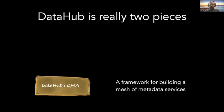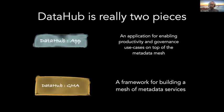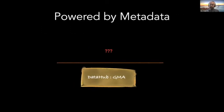DataHub is really two pieces. The first thing is DataHub GMA, which is a framework for building a mesh of metadata services. This is what you use to build a set of metadata services that actually talk to each other and form what I would call a metadata mesh or a metadata fabric. And on top of that is DataHub the app — the application that actually enables productivity and governance use cases on top of this mesh. Today I'll talk about what happens when you have a single powerful metadata mesh powered by DataHub GMA, and what use cases you can build on top of it and what we have done with it.